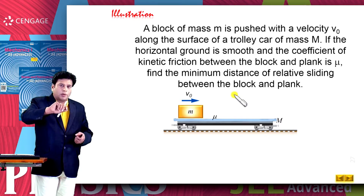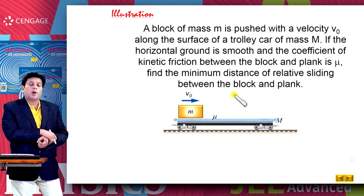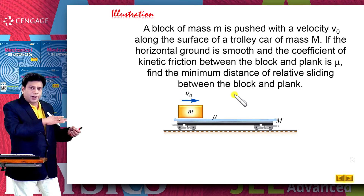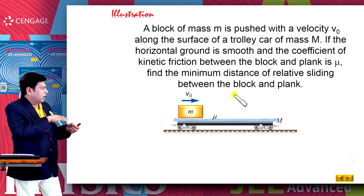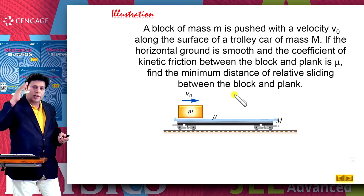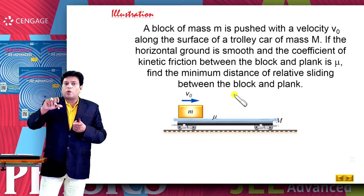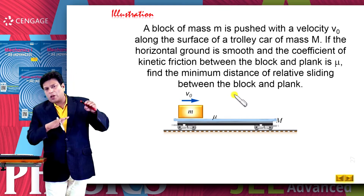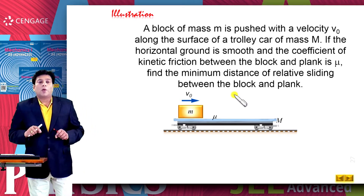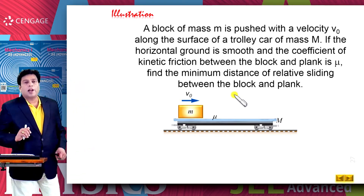If we throw the block onto the trolley, the kinetic friction will start acting on the block in the backward direction, opposite to the motion of the block. This will reduce the velocity of the block. In turn, the kinetic friction force acts on the trolley in the rightward direction, so the velocity of the trolley keeps increasing. There will be a certain time when the velocity of the block equals the velocity of the trolley, since the block's velocity is decreasing and the trolley's velocity is increasing.